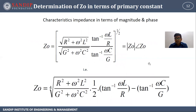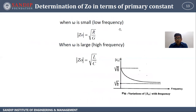Characteristic impedance in terms of magnitude and phase: when omega is small (low frequency), Z₀ = √(R/G). When omega is large (high frequency), Z₀ = √(L/C). The graph shows variation of Z₀ with respect to frequency — starting at √(R/G), decreasing, with minimum value √(L/C).